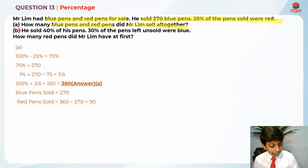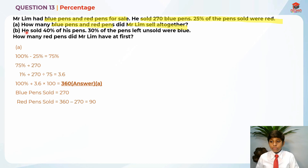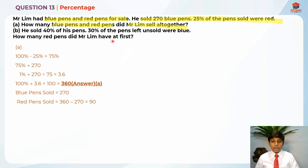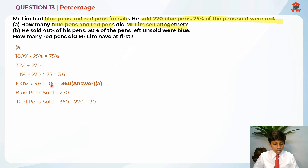Let's read Part B. He sold 40% of his pens, and 30% of the pens left unsold were blue. How many red pens did Mr. Lim have at first? So he sold 40% of his pens, which means this 360 is actually 40% of his pens.